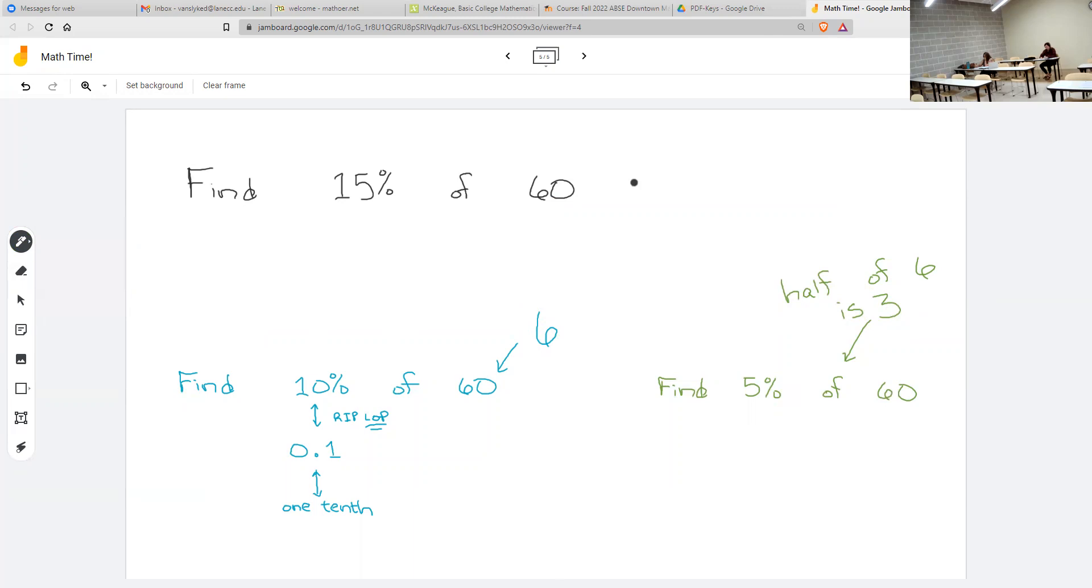If you wanted a 20% tip, you could take the 10%, one decimal point scoot, and then double it—12 bucks. So those are the common tips you would use with the mental math tricks to make it easy. Estimate by rounding your restaurant bill to a nice number, scoot the decimal point once, and then use that plus half or that doubled to do your tipping. Thanks.